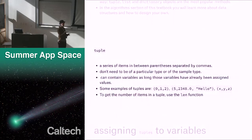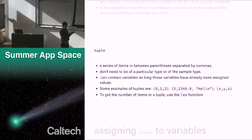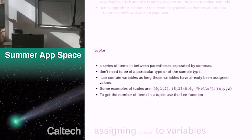A tuple is a series of items between parentheses, separated by commas. They don't need to be of a particular type — they can contain variables as long as those variables have already been assigned. Some examples are (0, 1, 2), (5, 2348.0, 'hello'), or (x, y, z) if you've previously set what x, y, and z equal. To get the number of items in a tuple, you can use the len function — it stands for length. You can pass the tuple itself or a variable that has a tuple as its value.